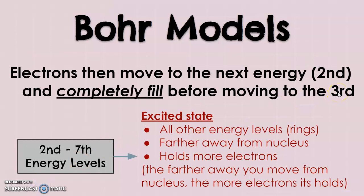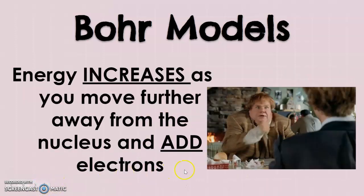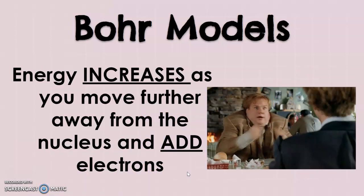After the first shell is filled, electrons move to fill the next energy level — the second — and they will completely fill it before moving on to the third. The second through seventh energy levels are in an excited state, meaning those electrons have more energy and are moving around. They're further away from the nucleus, and they hold more electrons. The further you move away from the nucleus, the more energy those electrons have.